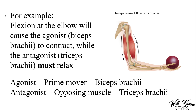For example, flexion at the elbow, as shown in this figure, will cause the agonist — the biceps brachii — to contract, while the antagonist — the triceps brachii — must relax. You can see the biceps brachii are contracted and shortened, and the triceps brachii are lengthened and relaxed.